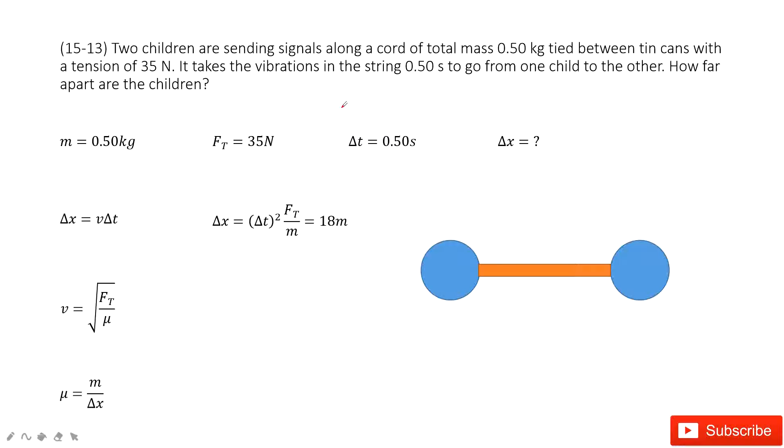In this system we can see we have two children sending signals along the chord. The total mass for this chord is given and the tension on this chord is also given.